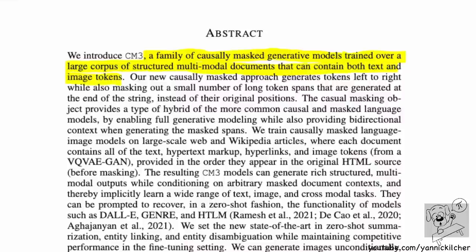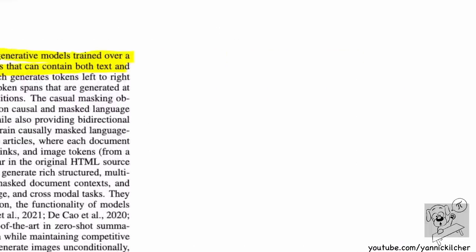What this model does is it's a language model that ingests HTML - a cleaned up version of HTML, but still HTML. If you don't know what HTML is, it's essentially the language your websites are written in. It consists of tags. For example, one tag is a div tag, which serves as a kind of container tag. You close it by saying slash-div, and anything in between is the content of that div.